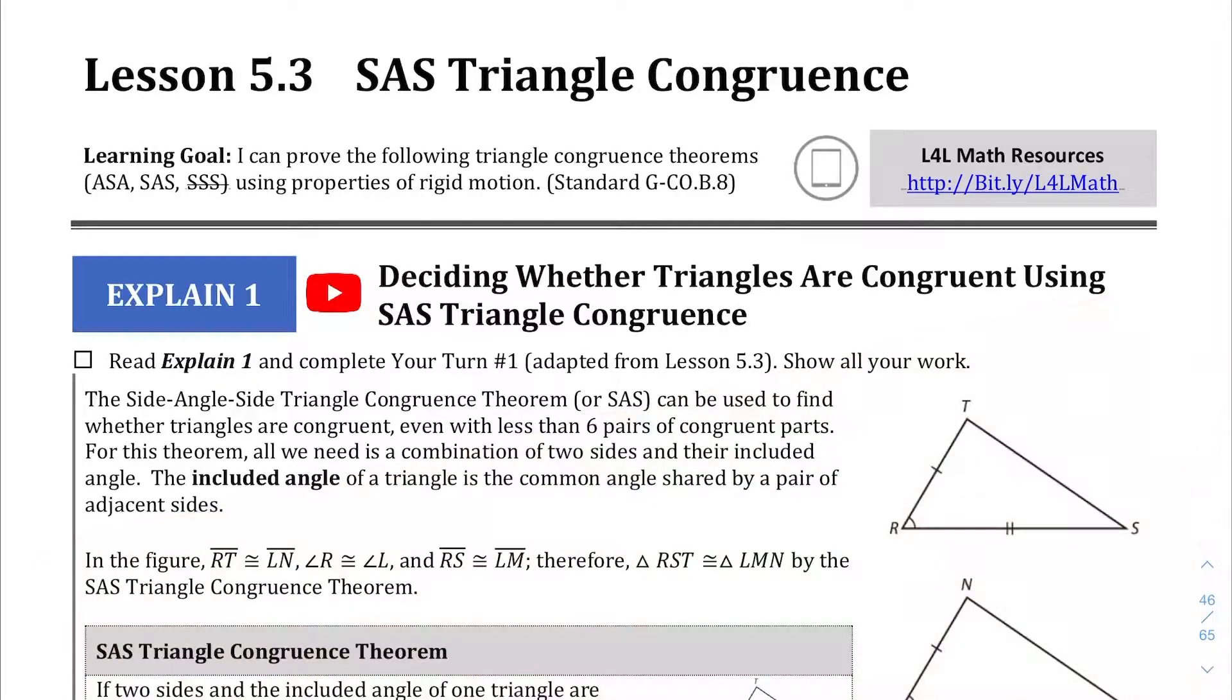Welcome to lesson 5.3 where we're going to be talking about side angle side triangle congruence. Now if you understood the previous few lessons then this is pretty much in the same line. If you can prove that two triangles have the same corresponding side, angle, and side in that order, then those two triangles are congruent.